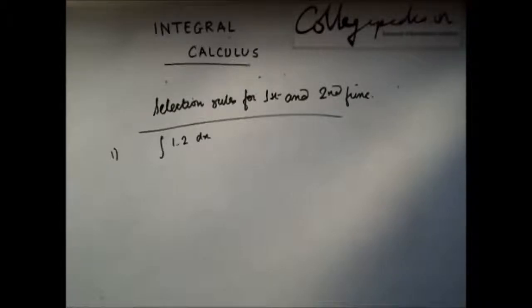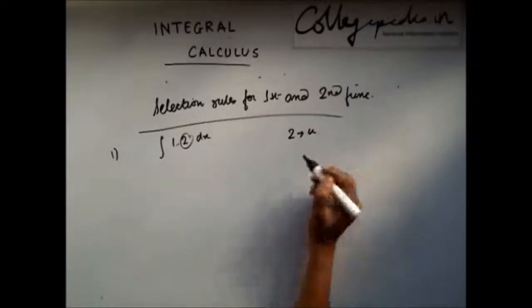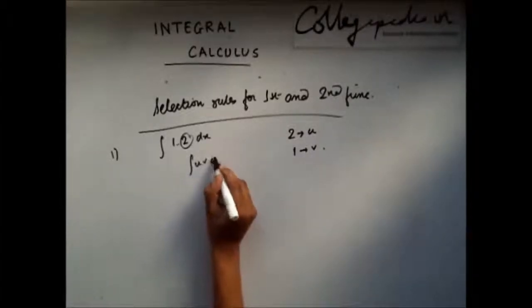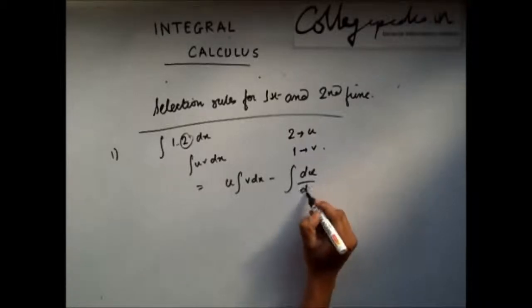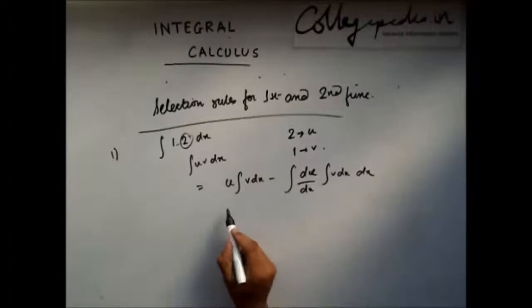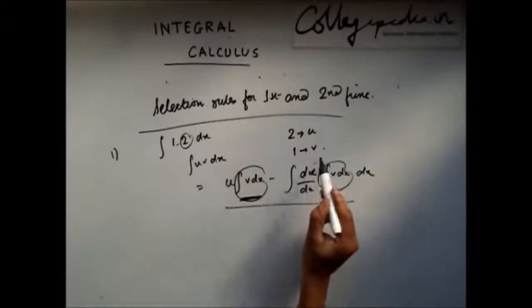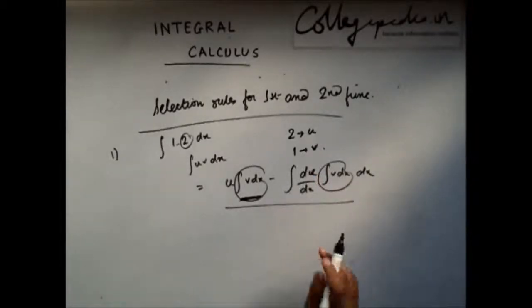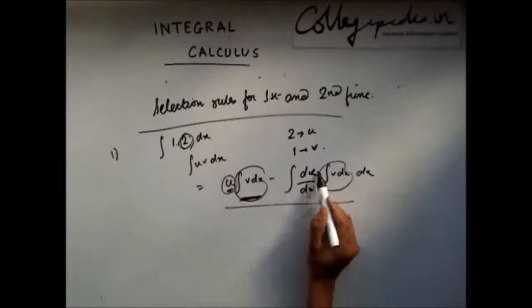Now, the first rule is that if one of the function is directly not integrable, then we take it as the first function. Let us say out of one and two, the two is not directly integrable, then I will take two as u as the first function and one as the second function. The reason being that when you integrate ∫uv dx, in this formula, you are required to integrate v twice. So if v is directly not integrable, then we take that function as the first function. So in this case if two is not directly integrable, we take it as the first function so that we are not required to integrate that function.